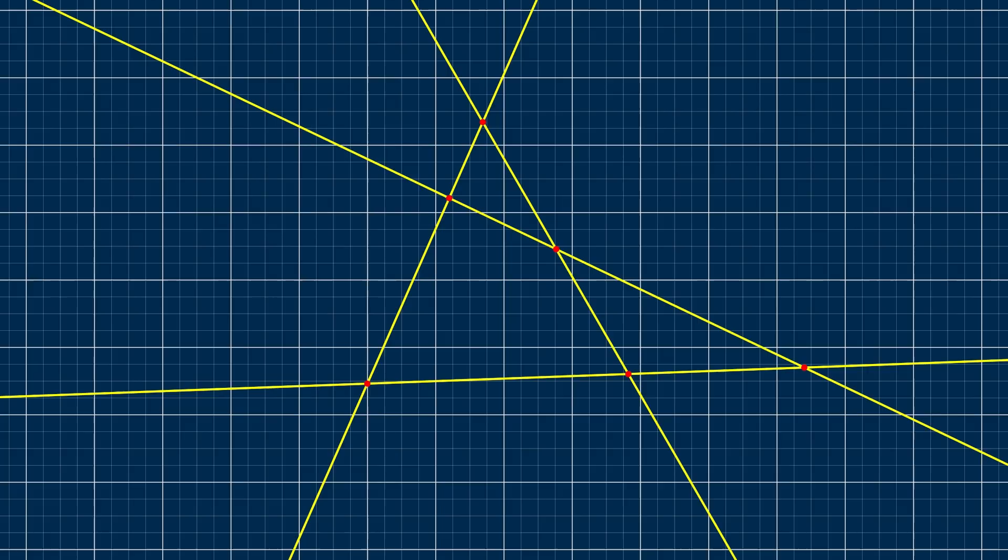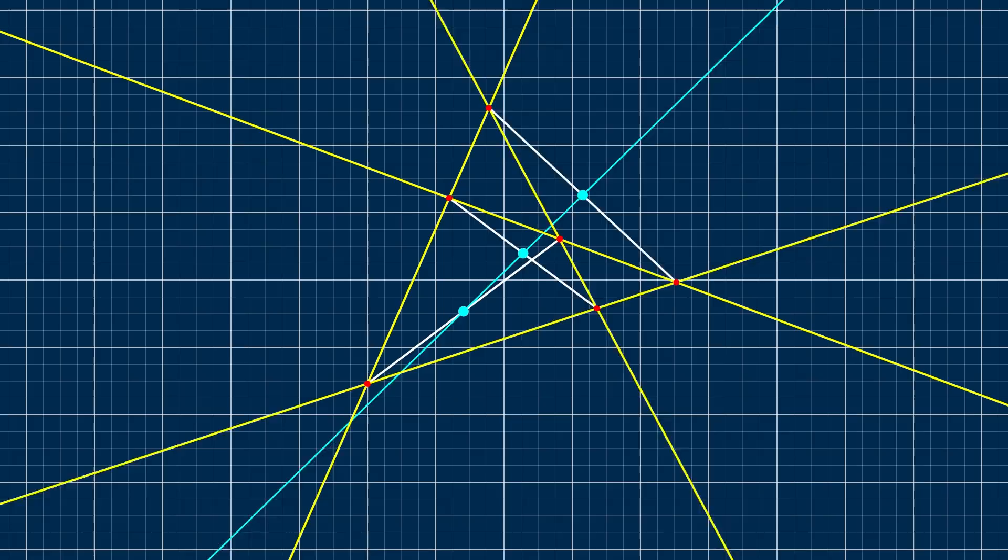And here's where I notice something odd. The midpoints of these lines, which are the centers of the ellipses, seem to all lie on the same line. And it doesn't matter how I arrange the quadrilateral, it's always true. Isn't that weird?